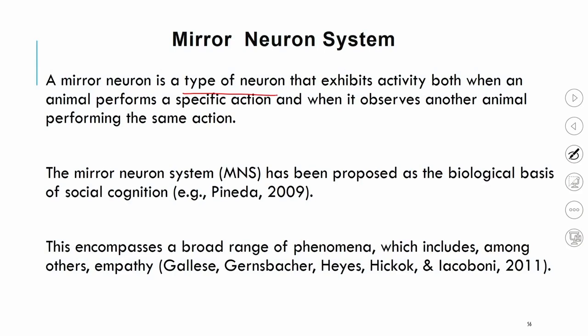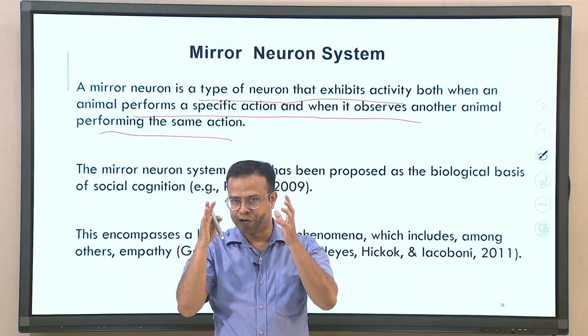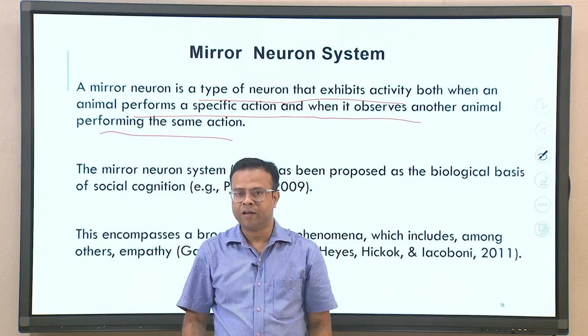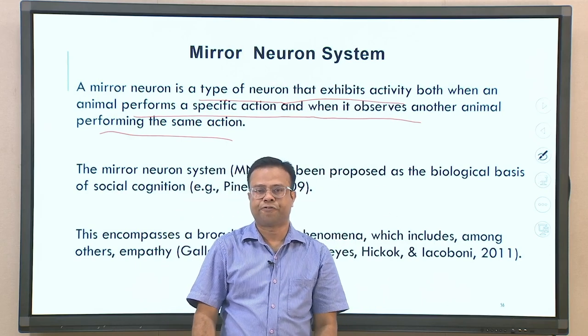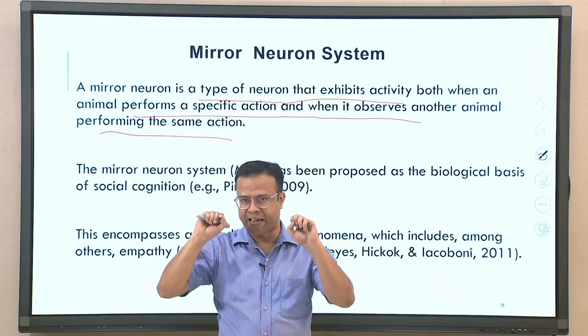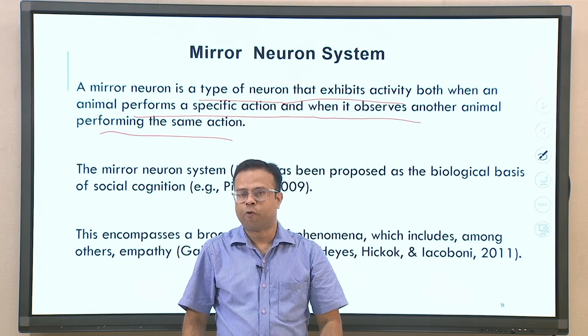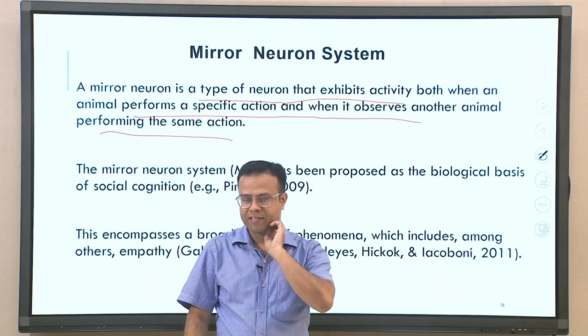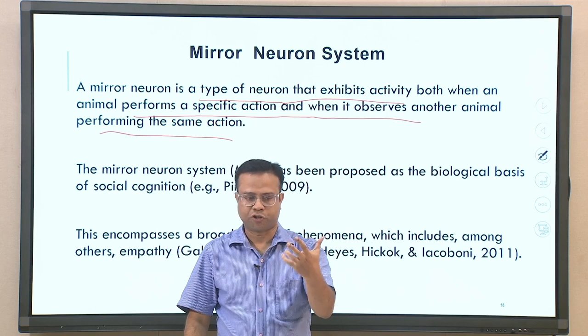One candidate in the brain that can explain empathy as a human behavior is called the mirror neuron system. A mirror neuron is a type of neuron that exhibits activity both when an animal performs a specific action and when it observes another animal performing the same action. These are neurons in the human as well as animal brain that mirror others' actions or emotions.